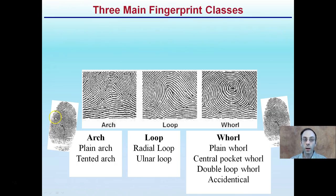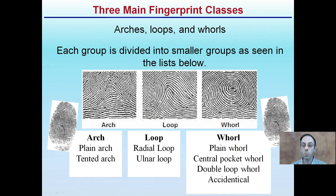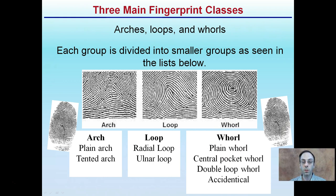The three major fingerprint classes are arches, loops, and whorls. Each group is divided into smaller groups. Within arches, we have a plain arch and a tented arch. Within loops, we have a radial and an ulnar loop. Whorls also have different types. I'm going to show you some examples of these so you can identify what your own fingerprints are.